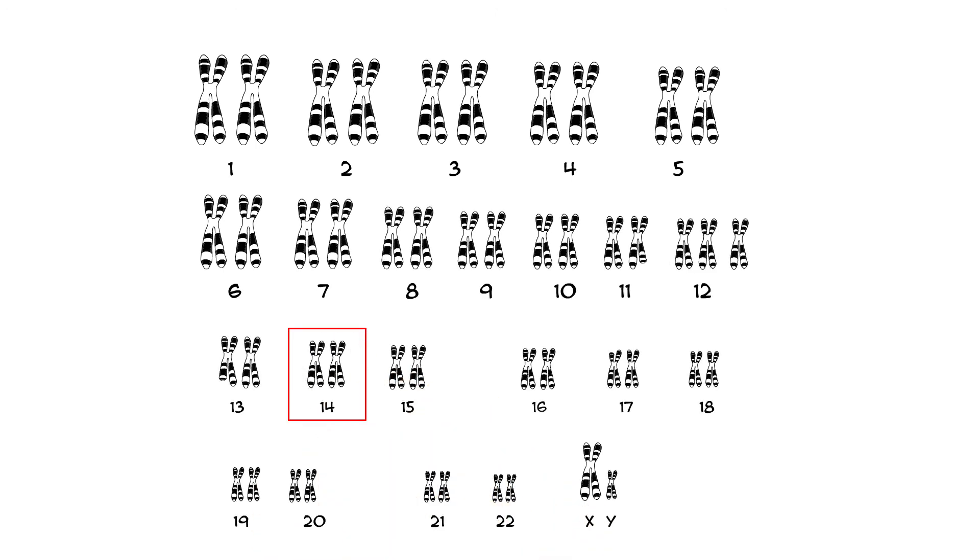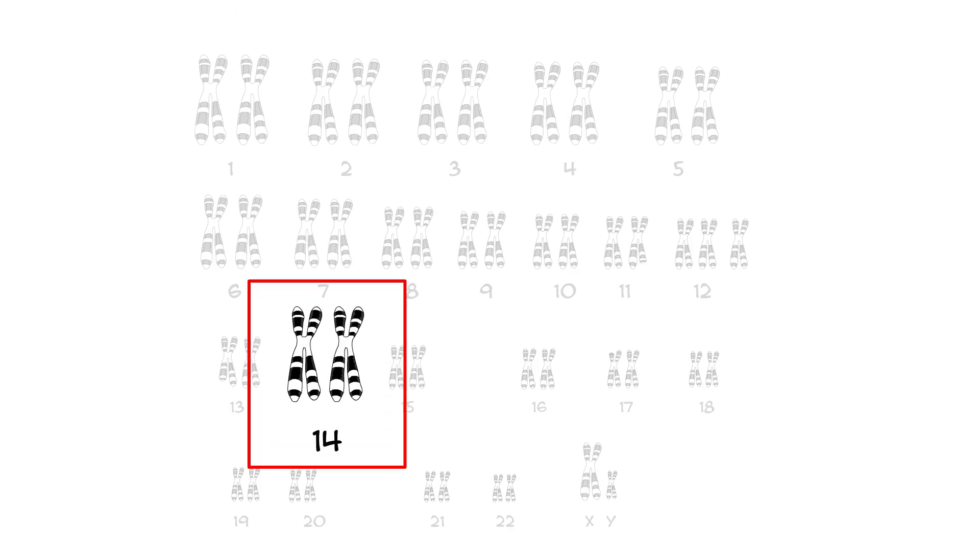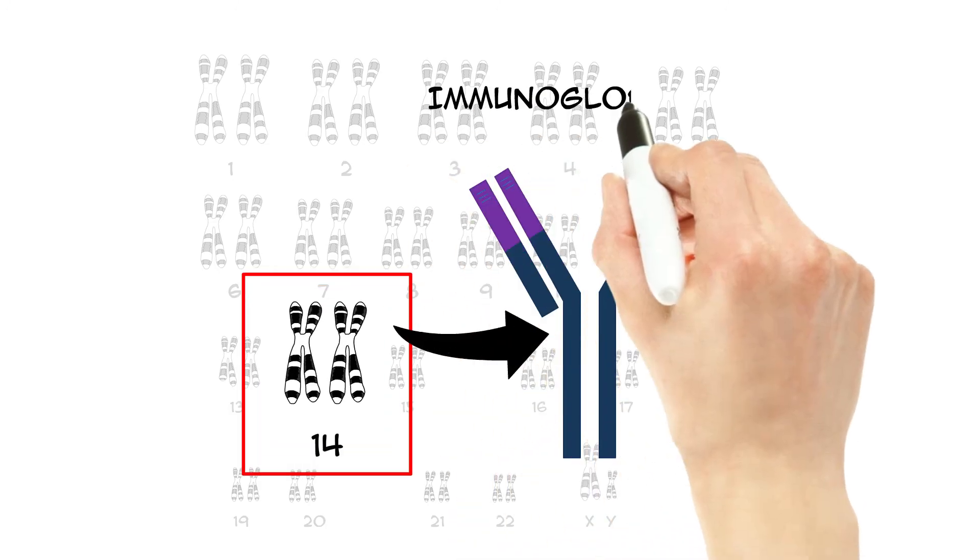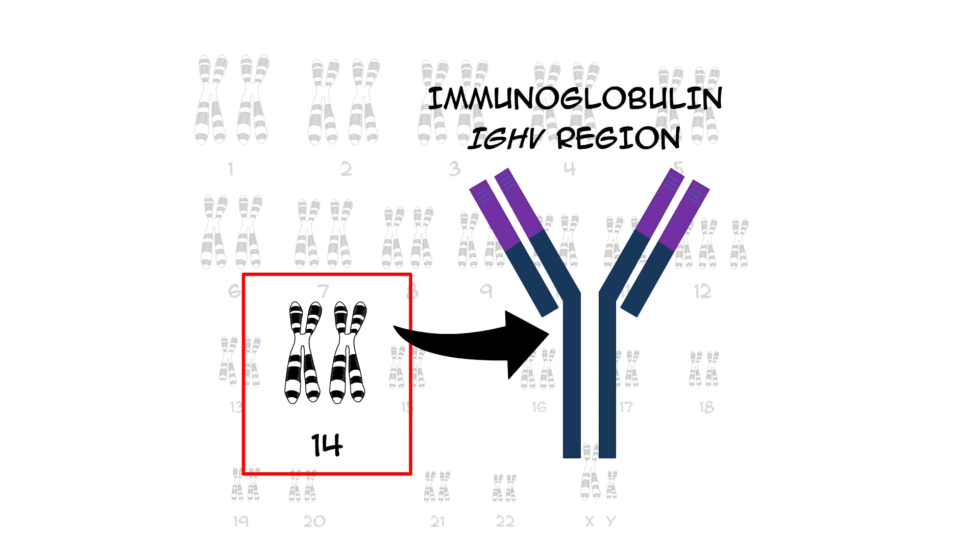A different kind of change in CLL cells affects a specific gene in chromosome number 14. This is the so-called IGHV gene, which makes one piece of our immunoglobulins, molecules that play a role in our immune system.